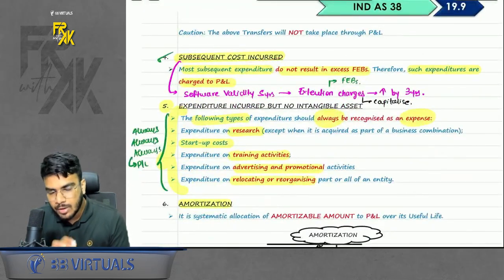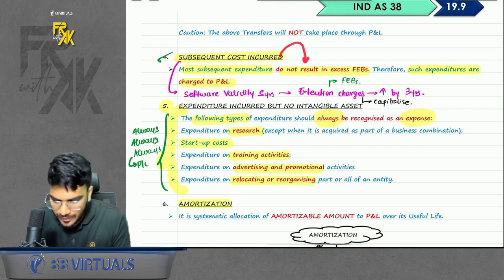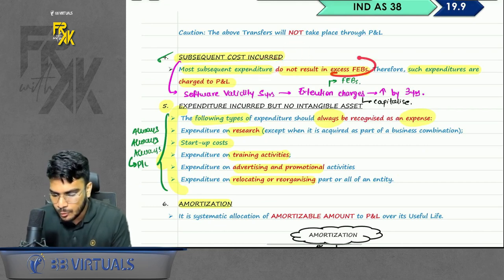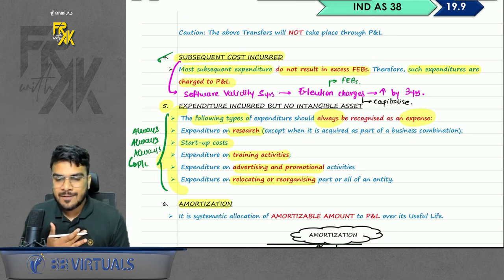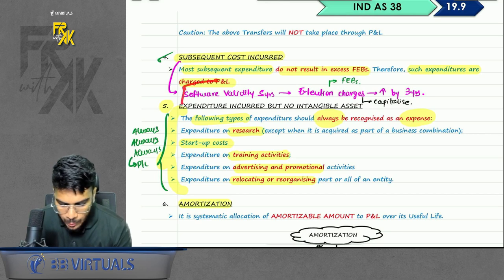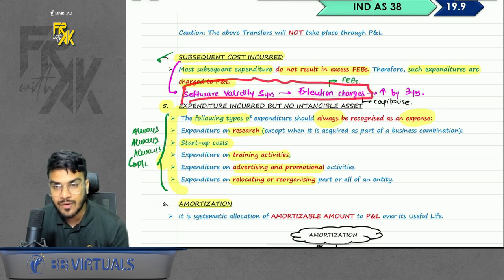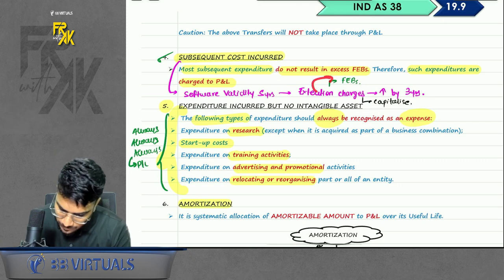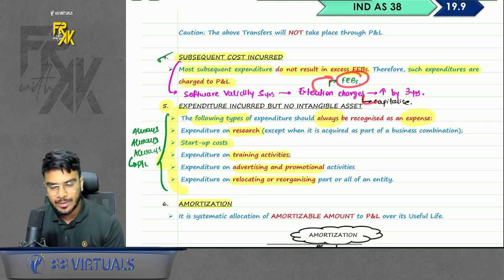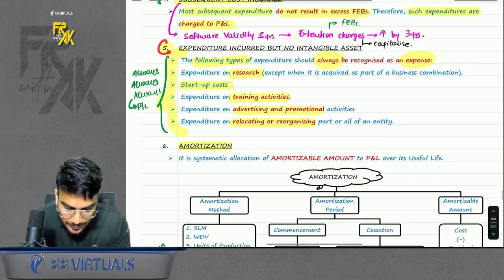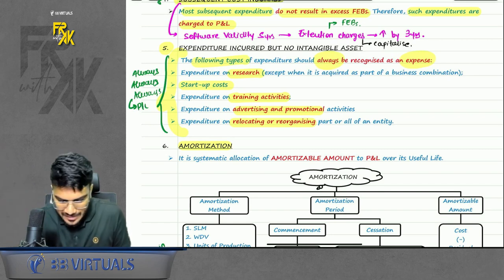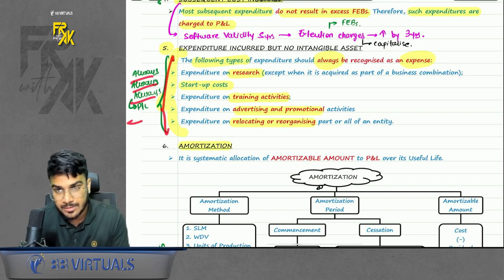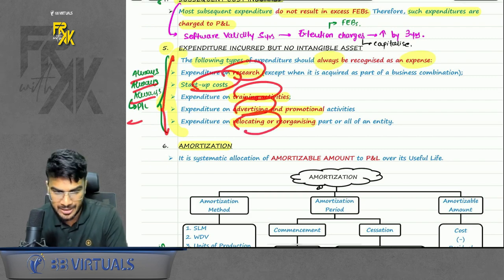Next point is subsequent cost incurred. Normally the standard says that in the case of intangibles, subsequent costs do not result in any future economic benefits, therefore such expenditure will be transferred to profit and loss. But there is an extra case: if you are increasing the validity of software by a certain number of years where you feel you will get the benefit, you can capitalize such subsequent expenditure. Also, there is a list of expenditure — we made a commitment that if we see these items we will always transfer to profit and loss: research, startup cost, training, advertising, relocation expenses.